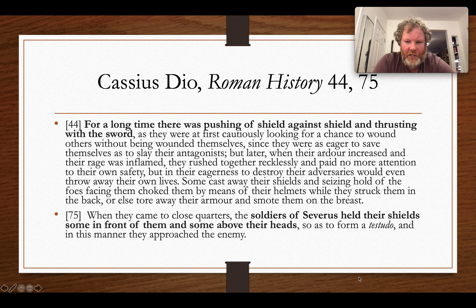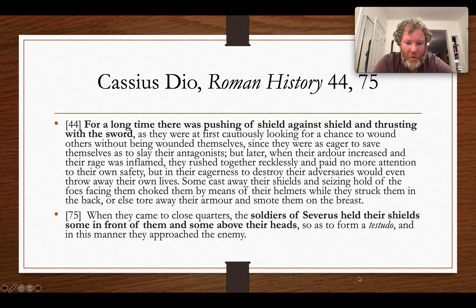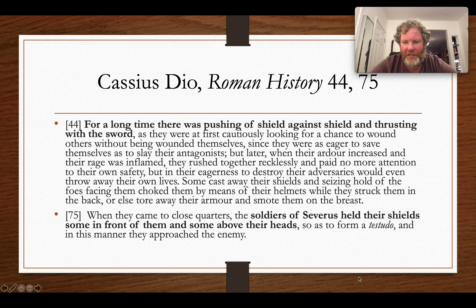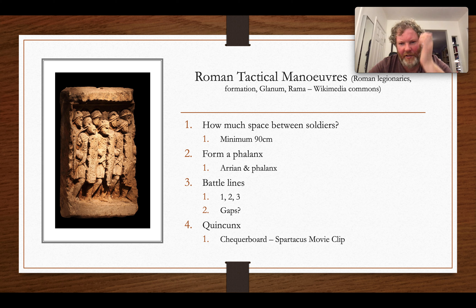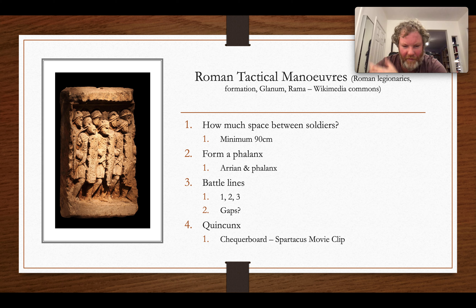To give a sense of the order and formations involved, one ancient source is Cassius Dio: 'For a long time there was pushing shield against shield and thrusting with the sword, as they were at first cautious, looking for a chance to wound others without being wounded themselves. But later, when their ardor increased and their rage was inflamed, they rushed together recklessly and paid no more attention to their own safety — in their eagerness to destroy their adversaries they would even throw away their own lives. Some cast away their shields and, seizing hold of the foe facing them, choked them by means of their helmets while they struck them in the back, or tore away their armor and smote them on the breast. And when they came to close quarters, the soldiers held their shields in front of them and some above their heads so as to form a testudo.'